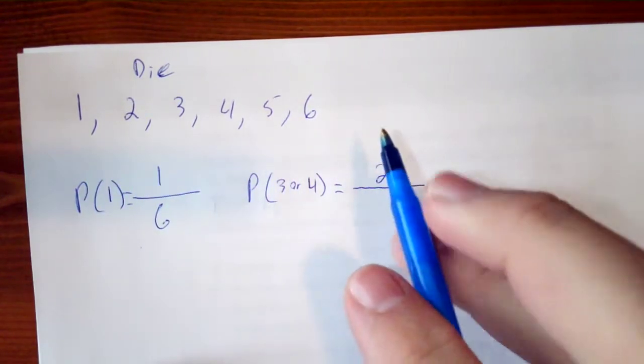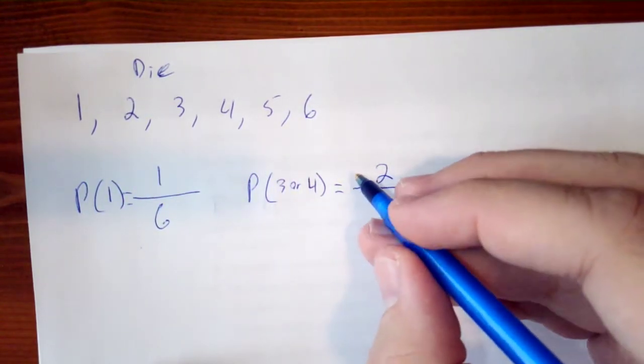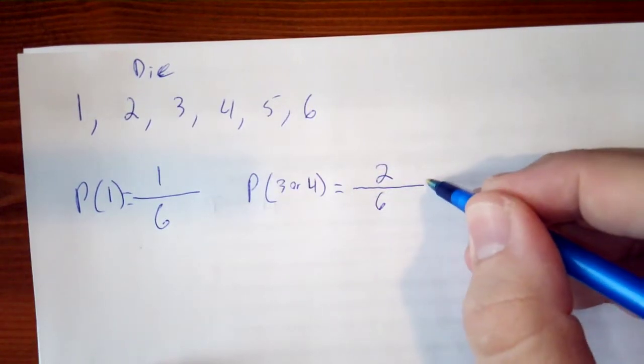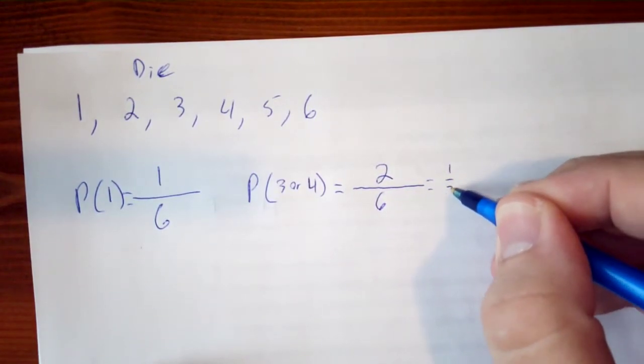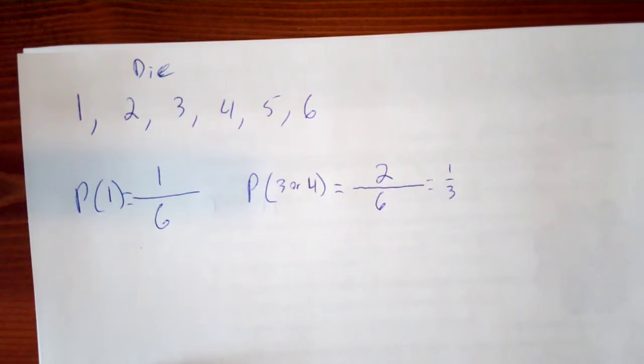And then there are six possibilities, which reduces down to one-third. So we have a higher probability of rolling one of two numbers than we do of just rolling one number.